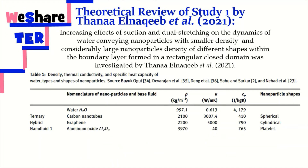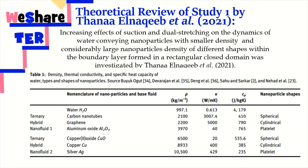The first ternary hybrid nanofluid is the motion of water conveying smaller density nanoparticles like copper nanotubes, aluminum oxide, and graphene. The second ternary hybrid nanofluid is a colloidal mixture of water with substantially large densities of nanoparticles like copper oxide, copper, and silver.